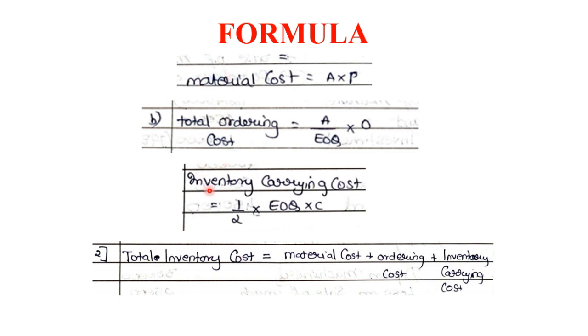These are the three component formulas — A, B, and C. Note down all three along with the major formula. The total inventory cost equals material cost plus ordering cost plus total inventory carrying cost. Based on these formulas we will see what kinds of sums can be asked.